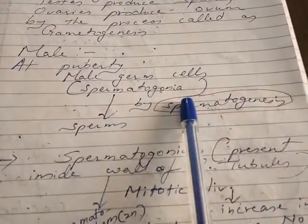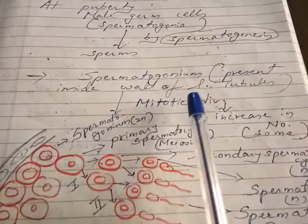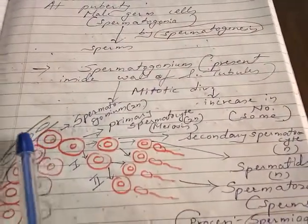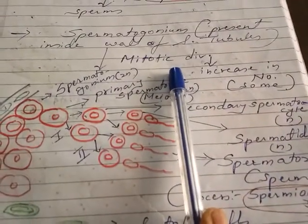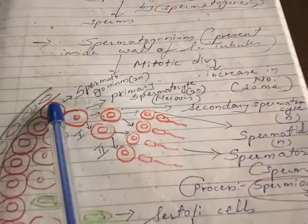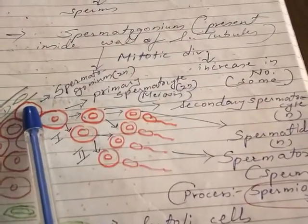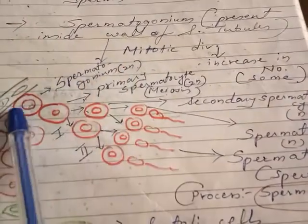In the case of male, at puberty, the male germ cell — the spermatogonia — by the process of spermatogenesis will produce sperms. Spermatogonia are present inside the wall of the seminiferous tubule. They undergo mitotic division and increase in number, and some of the spermatogonia will undergo spermatogenesis. Spermatogonia are 2N, that is diploid.